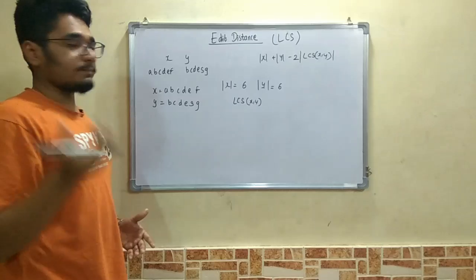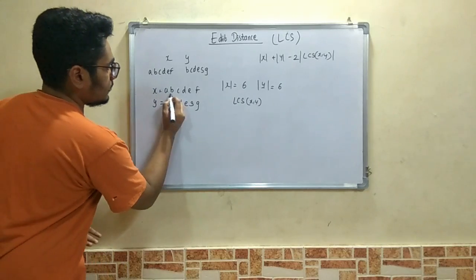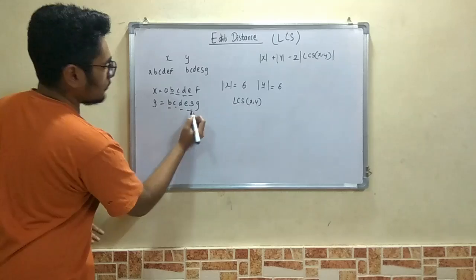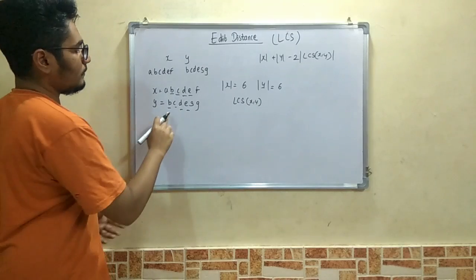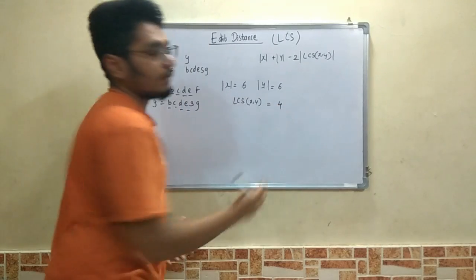The longest common subsequence means the common points between these two terms. We have b in common, c in common, d in common, and e in common. So the frequency comes out to be 1, 2, 3, and 4. The LCS between x comma y is 4.